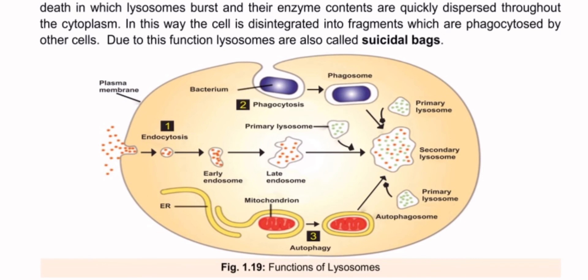In the diagram, the first step is endocytosis, forming an endosome, then a late endosome, and finally a secondary lysosome. The primary lysosome is also shown in this structure.